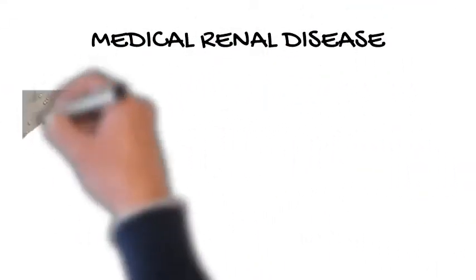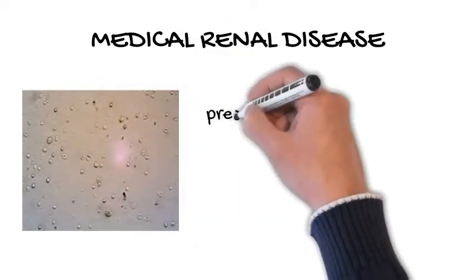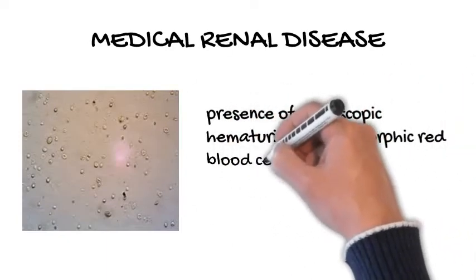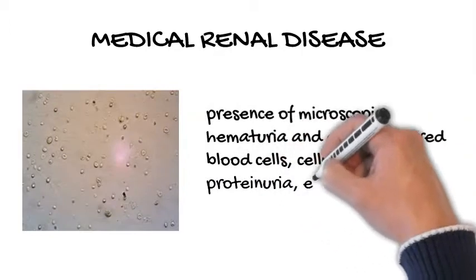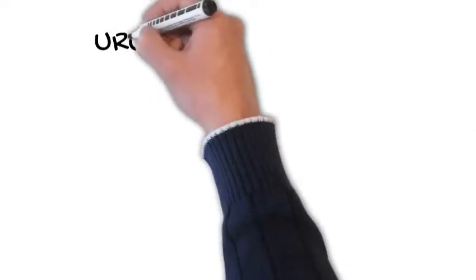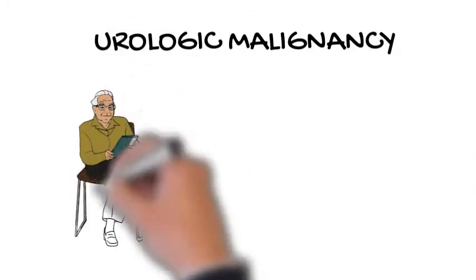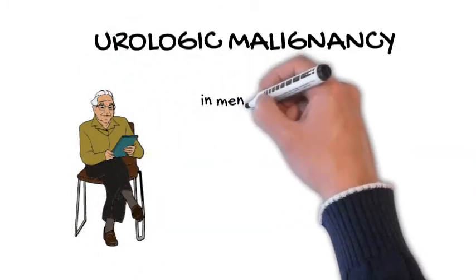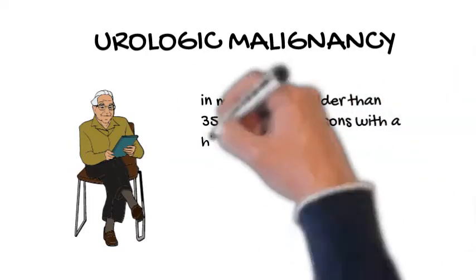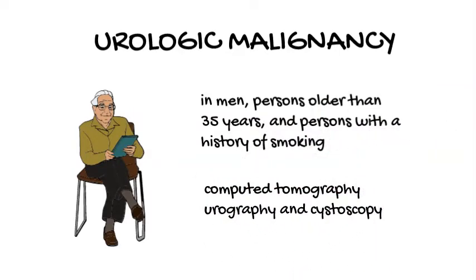Signs and symptoms of medical renal disease: The presence of microscopic hematuria and dysmorphic red blood cells, cellular casts, proteinuria, elevated creatinine level, or hypertension should raise suspicion for medical renal disease. The risk of urologic malignancy increases significantly in men, persons older than 35 years, and persons with a history of smoking. Patients with risk factors for urologic malignancy should undergo further investigation with computed tomography urography and cystoscopy.